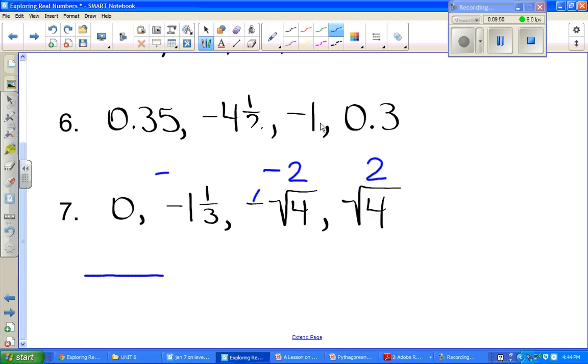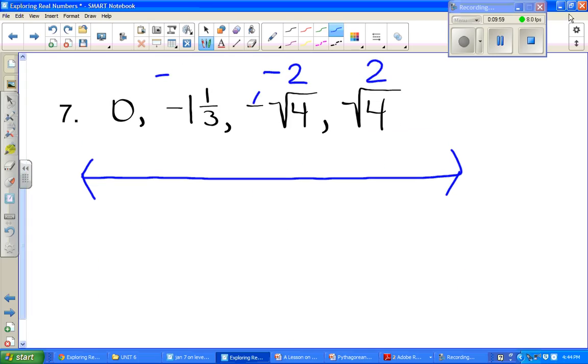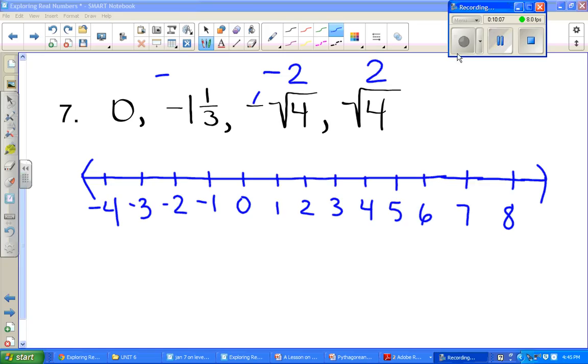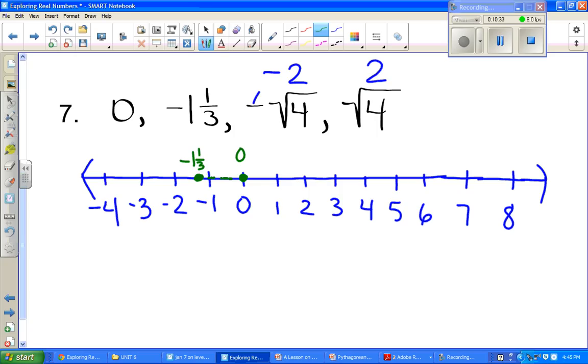Let's draw our number line. Let's start with that difficult one, 0. Where does 0 go? The next one, negative 1 and 1 third. We know we're going to go over left to the negative 1. And we know it's a little bit further. And if you go between negative 1 and negative 2 and cut that into three parts, it's just going to be the first part. So negative 1 and 1 third. The next one is negative 2. Negative 2 should be easy to find. And it's negative square root of 4. And then the last part of that, square root of 4, which is 2. And there you have it. You have it on a number line.